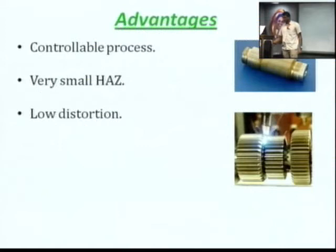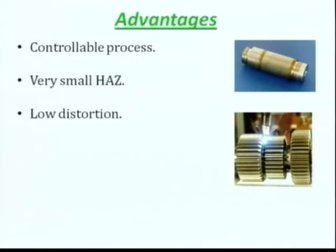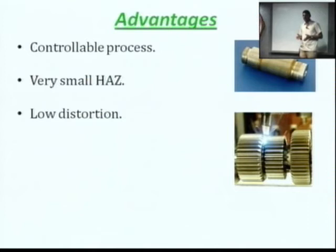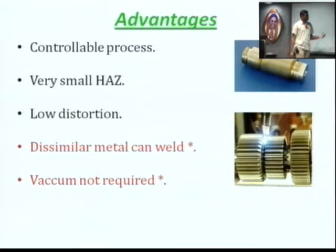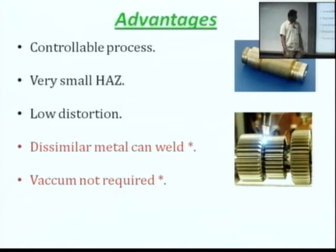It has very low distortion, and the heat affected zone is very small. If you produce your weld, the heat affected zone in the welding size is very, very small, and it is a very controlled process. The first main advantage is that a vacuum is not required. Also, you can weld dissimilar metals — that is, dissimilar metals can be welded using this method.